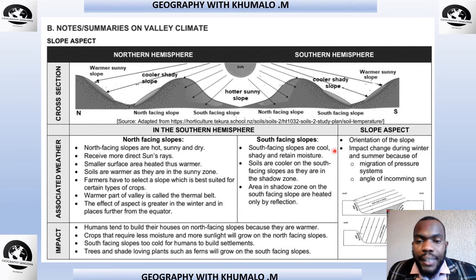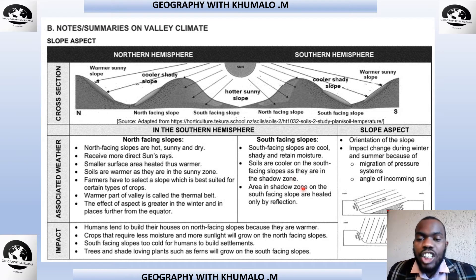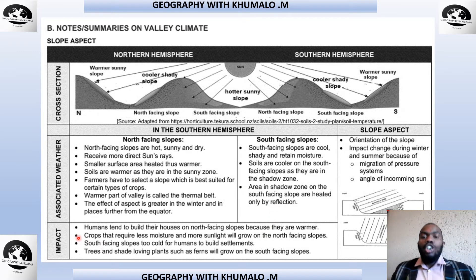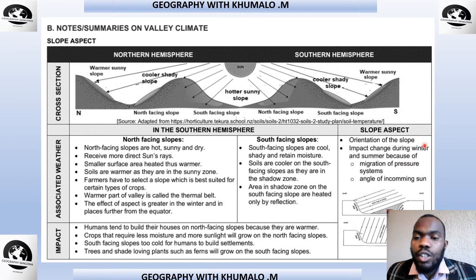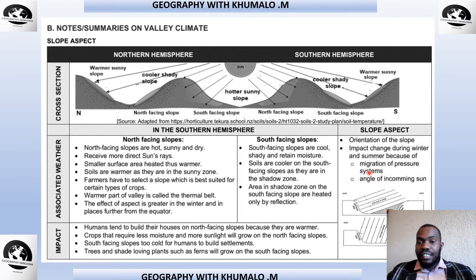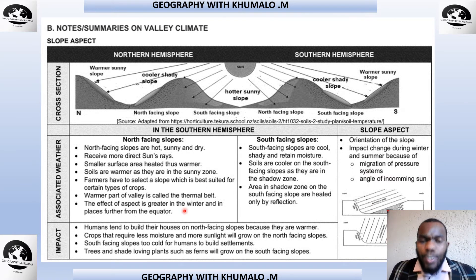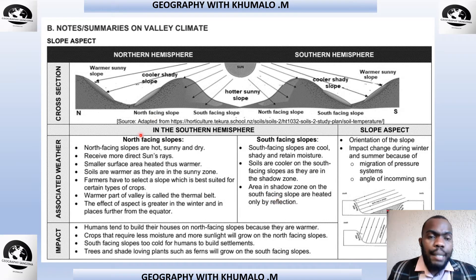The south-facing slopes are cooler, shady, and retain moisture. Soils are cooler on the south-facing slope as they are in the shadow zone. Areas on the south-facing slope are heated only by reflection. The orientation impact changes during winter and summer seasons because of migration of pressure systems, which follow the ITCZ migration. In the exam, they will give you a diagram and expect you to interpret it.